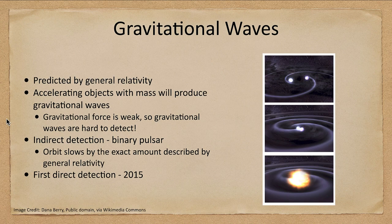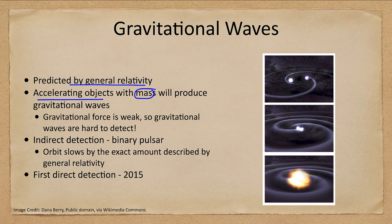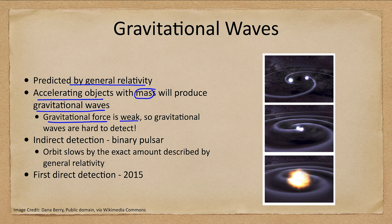So what are gravitational waves? This was a prediction of general relativity. Essentially any accelerating object with mass will produce gravitational waves, just as accelerating objects with electrical charges will produce electromagnetic waves — the light that we see. Gravitational waves are based on the gravitational force, however the gravitational force is by far the weakest of the four fundamental forces of nature, and gravitational waves are really hard to detect.